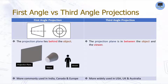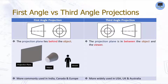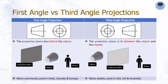The second one is the third angle projection, represented by this symbol. In third angle projection, the projection plane is in between the object and the viewer — in other words, the viewer is looking through the projection plane. This method is more widely used in the USA, UK, and Australia.